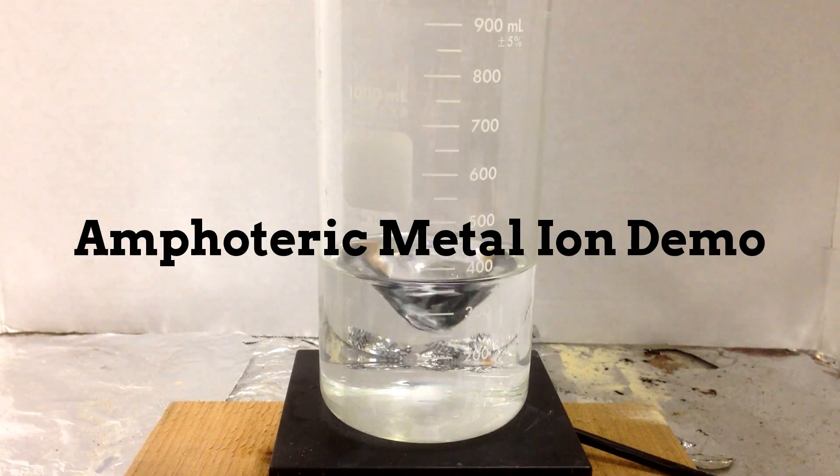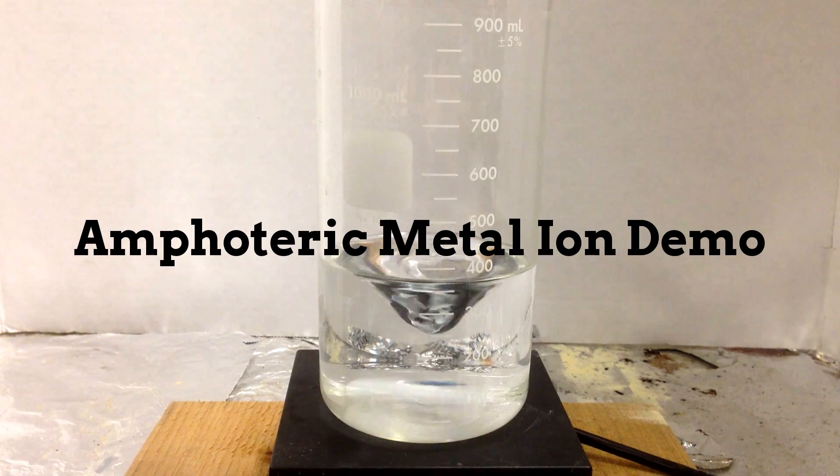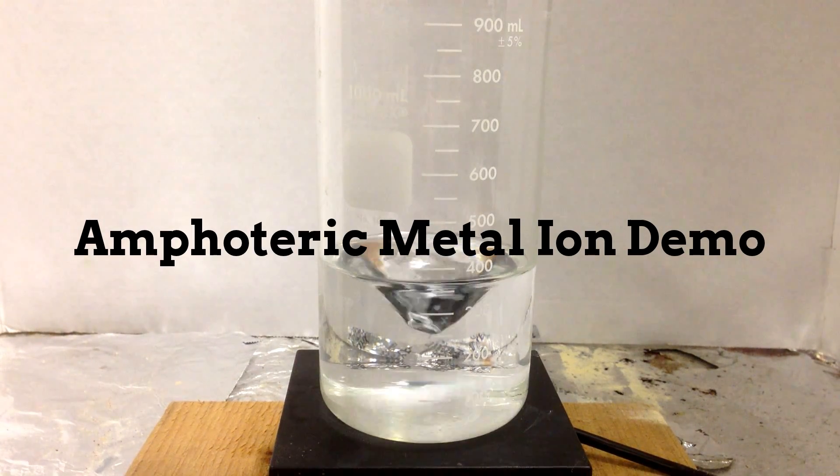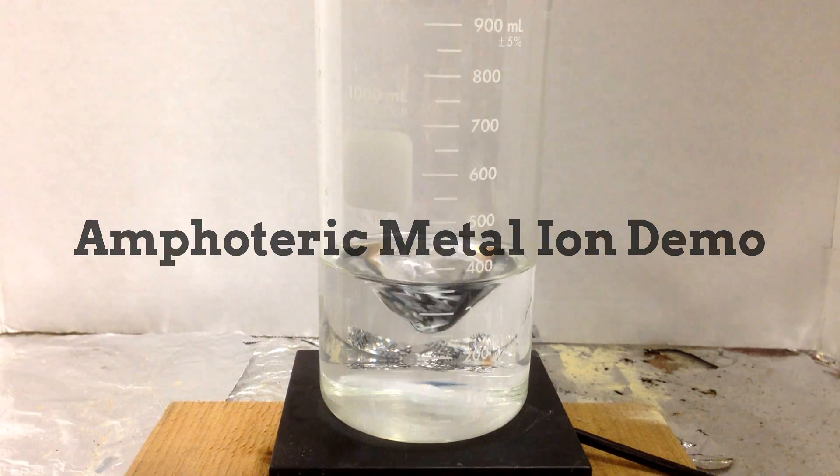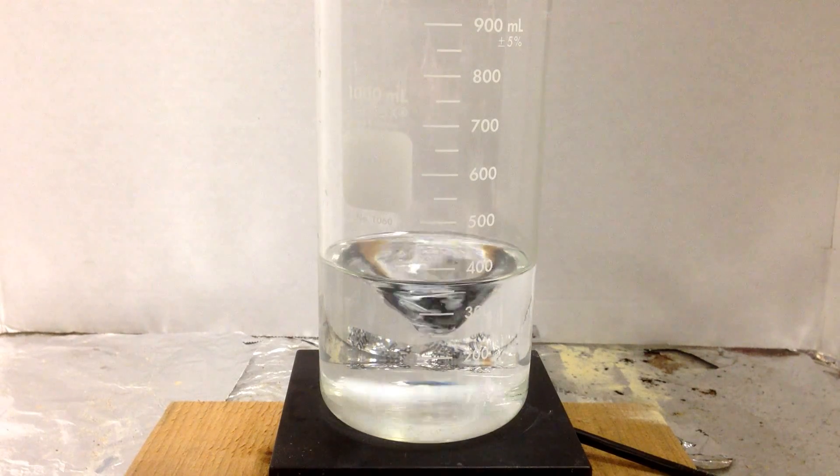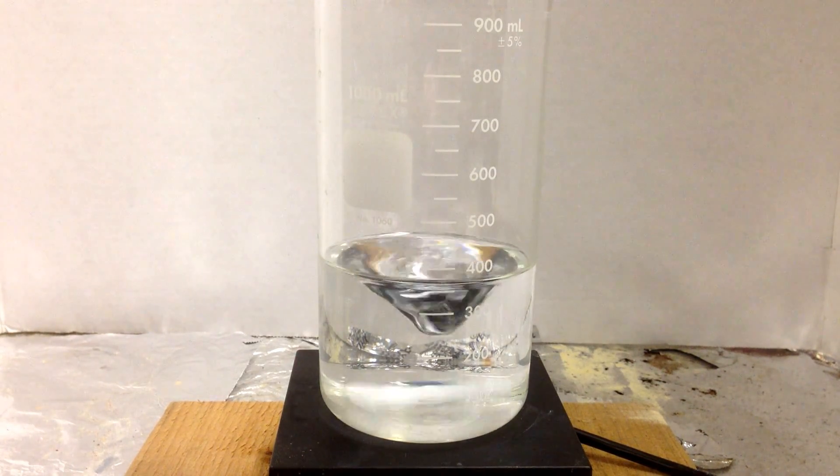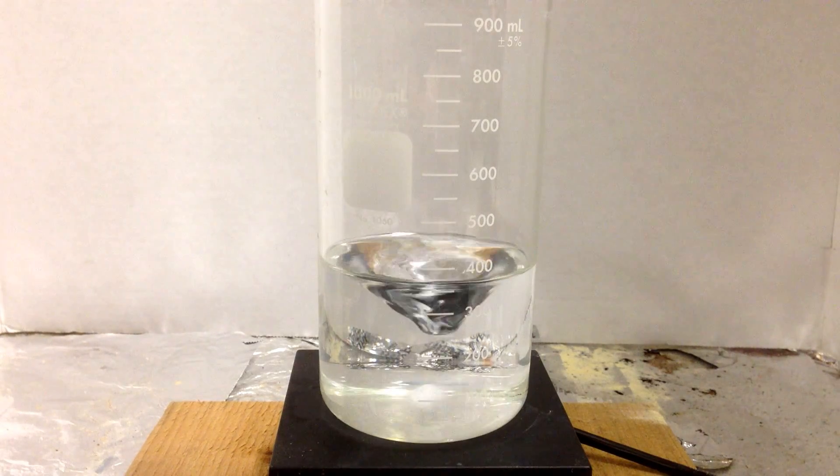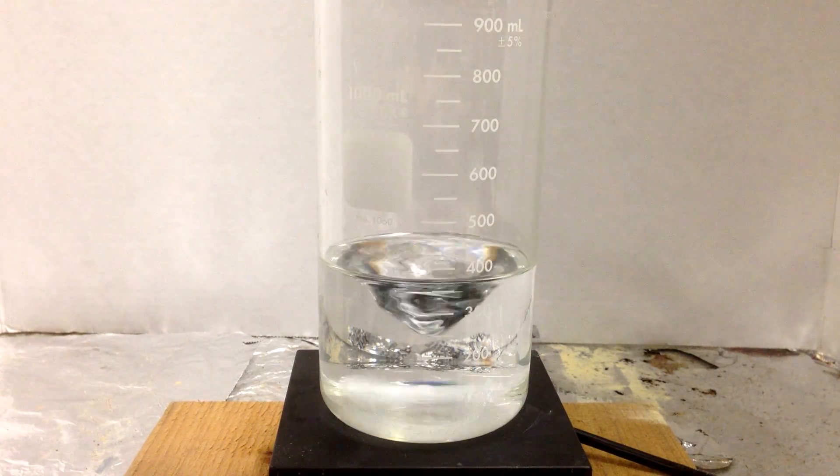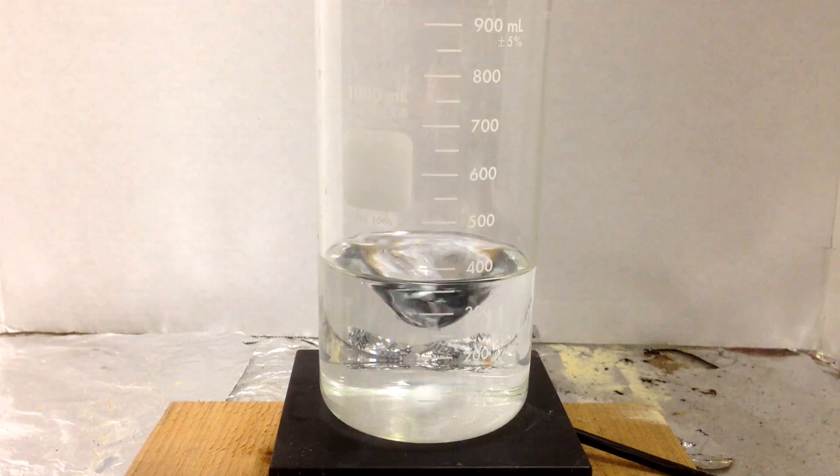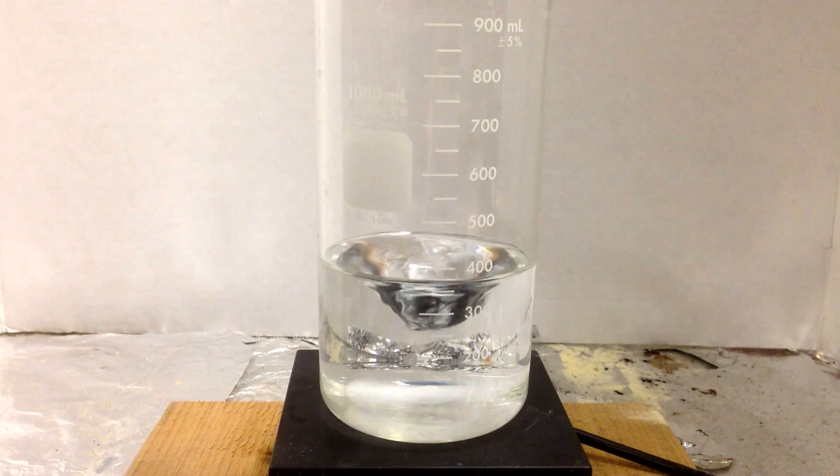This is a demonstration of amphoteric metal ions. There's only a few metals that, when they become ions, exhibit amphoteric properties, the ability to act as an acid or a base, or be affected by an acid and or a base. They include lead plus two, aluminum plus three, chromium plus three, and zinc plus two.